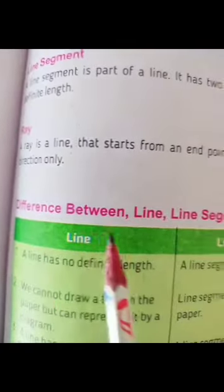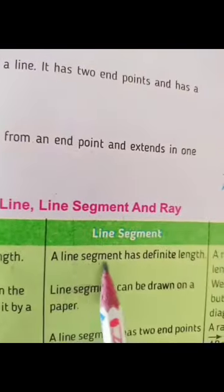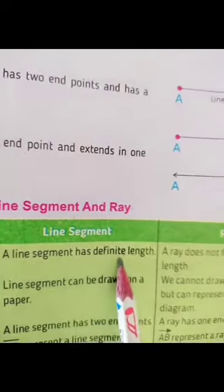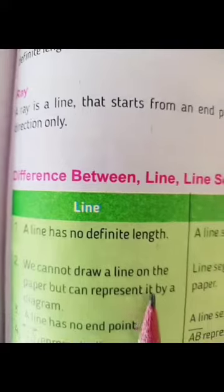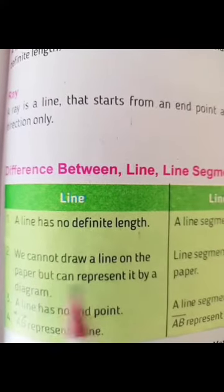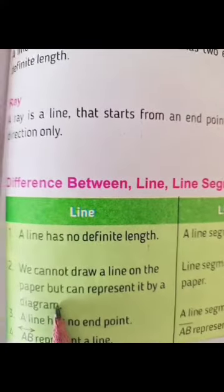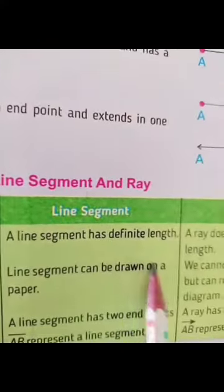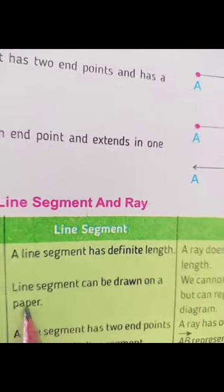A line has no definite length, whereas a line segment has a definite length. A line does not have a definite length. Here we cannot draw a line on paper, but we can represent it by a diagram. A line segment can be drawn on paper.